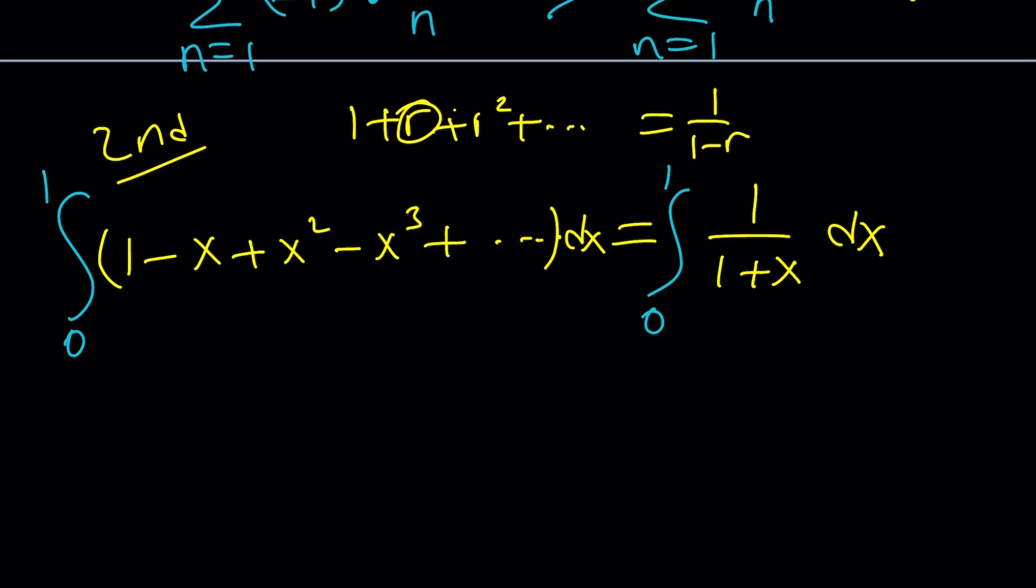When I integrate the left-hand side, what am I getting? x minus x squared over 2 plus x cubed over 3 minus x to the fourth over 4, so on and so forth. It goes on forever. And then the right-hand side, and obviously I'm supposed to replace 0 and 1. And the right-hand side is just going to be ln of 1 plus x. I don't need absolute value. From 0 to 1. Let's go ahead and do the replacements.